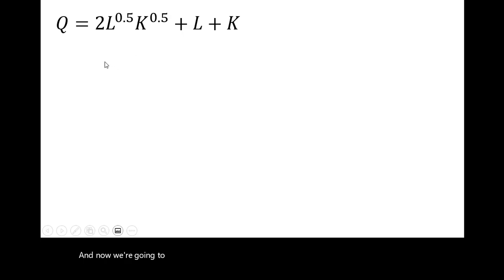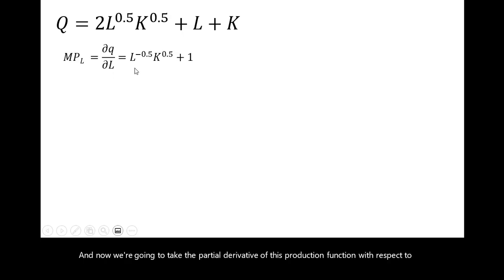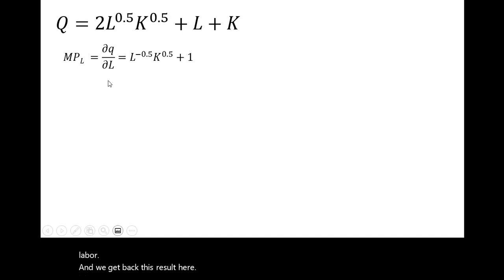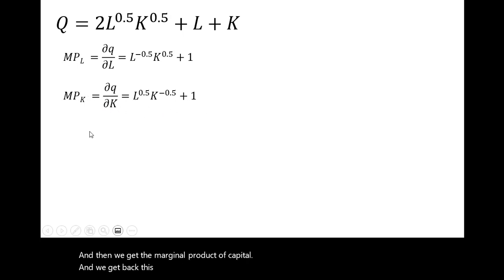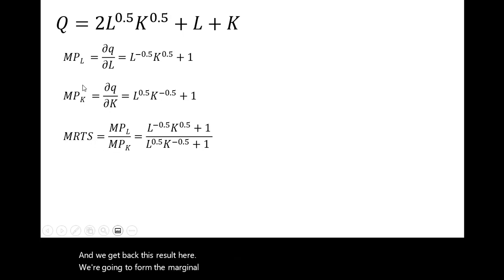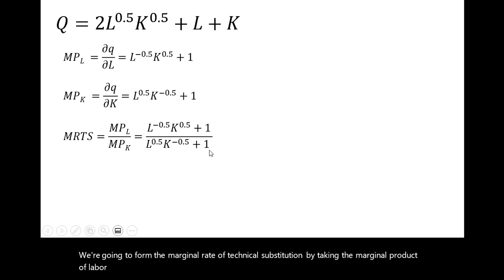And now we're going to take the partial derivative of this production function with respect to labor, and we get back this result here. And then we get the marginal product of capital, and we get back this result here. We're going to form the marginal rate of technical substitution by taking the marginal product of labor and dividing it by the marginal product of capital.